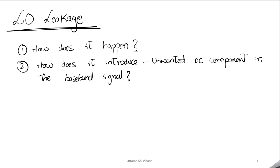LO leakage happens at the RF stage, but you might be a baseband algorithm designer and wonder why you need to know about RF stages. The thing is, whatever effects happen at the RF stage will show effects at the baseband signal processing level. In this case, an unwanted DC component is introduced at the baseband signal, which causes problems in our signal processing chain. That is why, even as a baseband algorithm designer, you should know all the RF impairments and IQ impairments — how they happen and what they cause — so you can design your algorithms well.